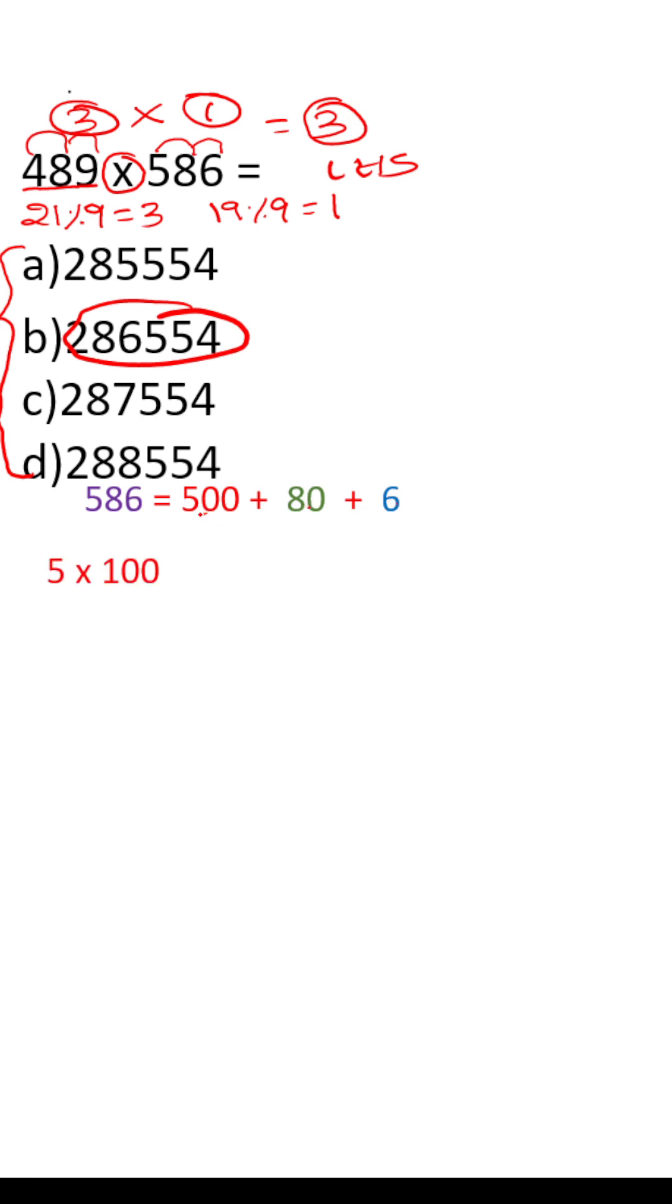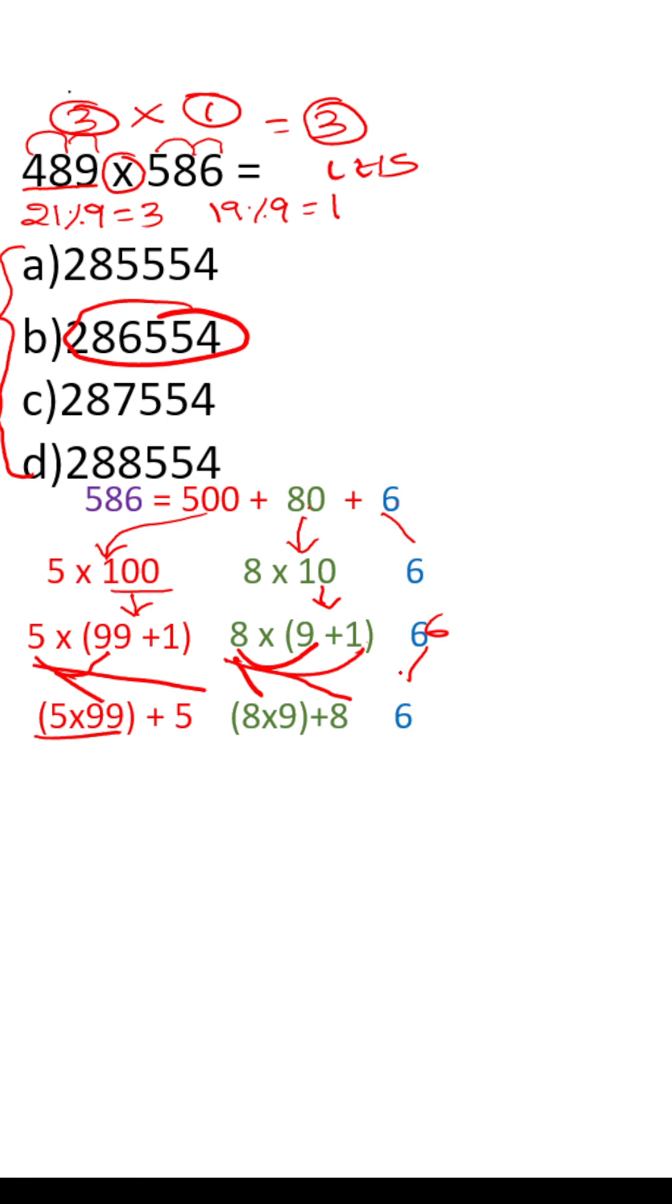Again, this 500 can be broken down into 5 into 100. Same here, 8 into 10, 6. This 100 again can be broken down into 99 plus 1. 10 can be broken down into 9 plus 1, 6 as it is. And here see 5 into 99 plus 5 into 1, 8 into 9 plus 8 into 1. Here 6 as it is.